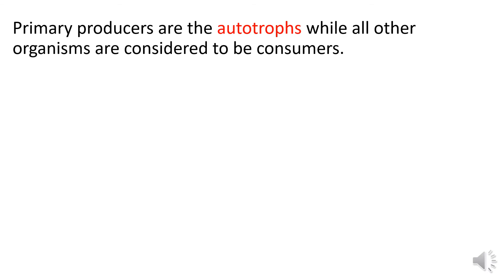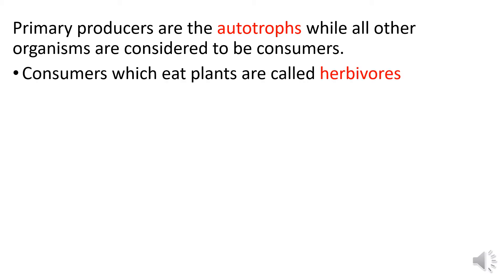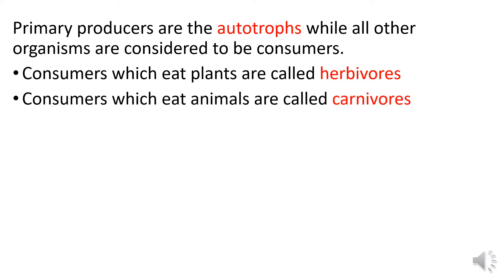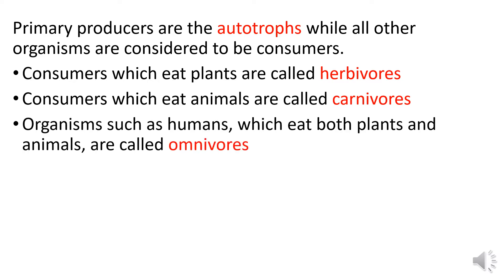Primary producers are the autotrophs, while all other organisms are considered to be consumers. Consumers which eat plants are called herbivores. Consumers which eat animals are called carnivores. While organisms such as humans, which eat both plants and animals, are called omnivores.